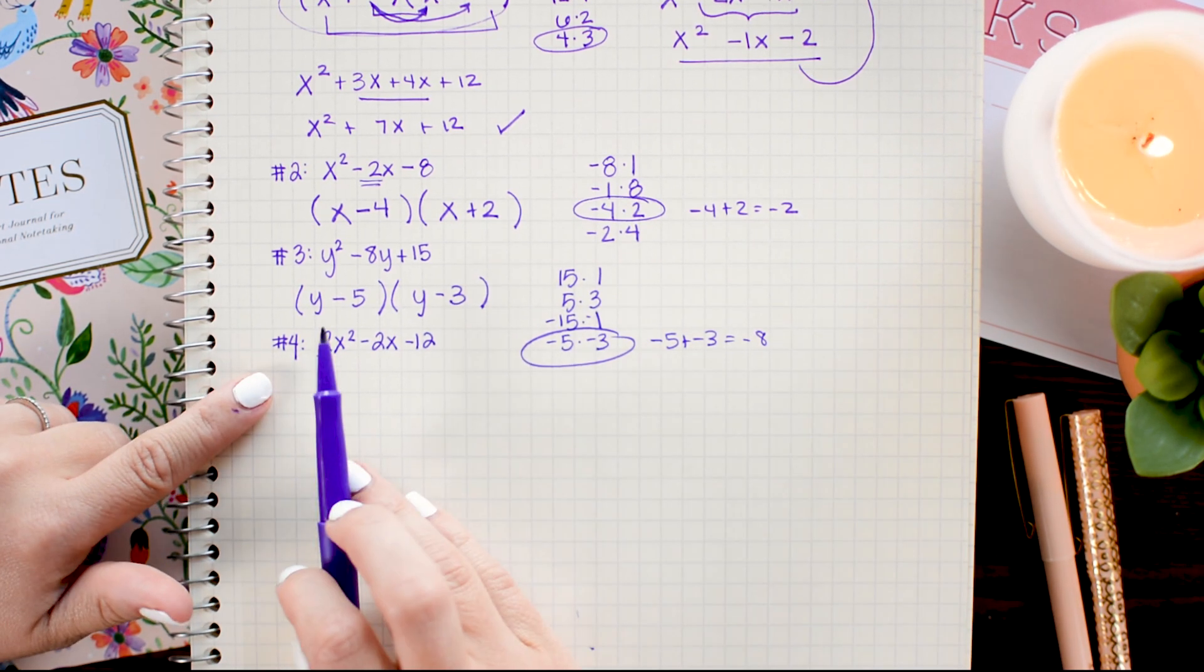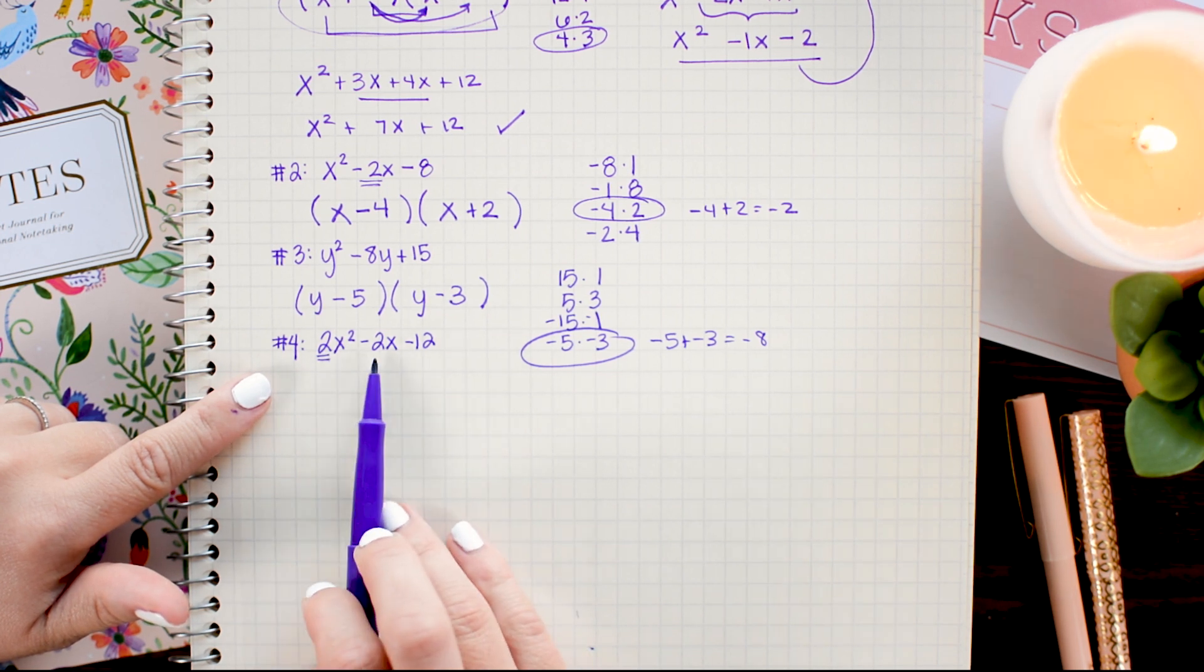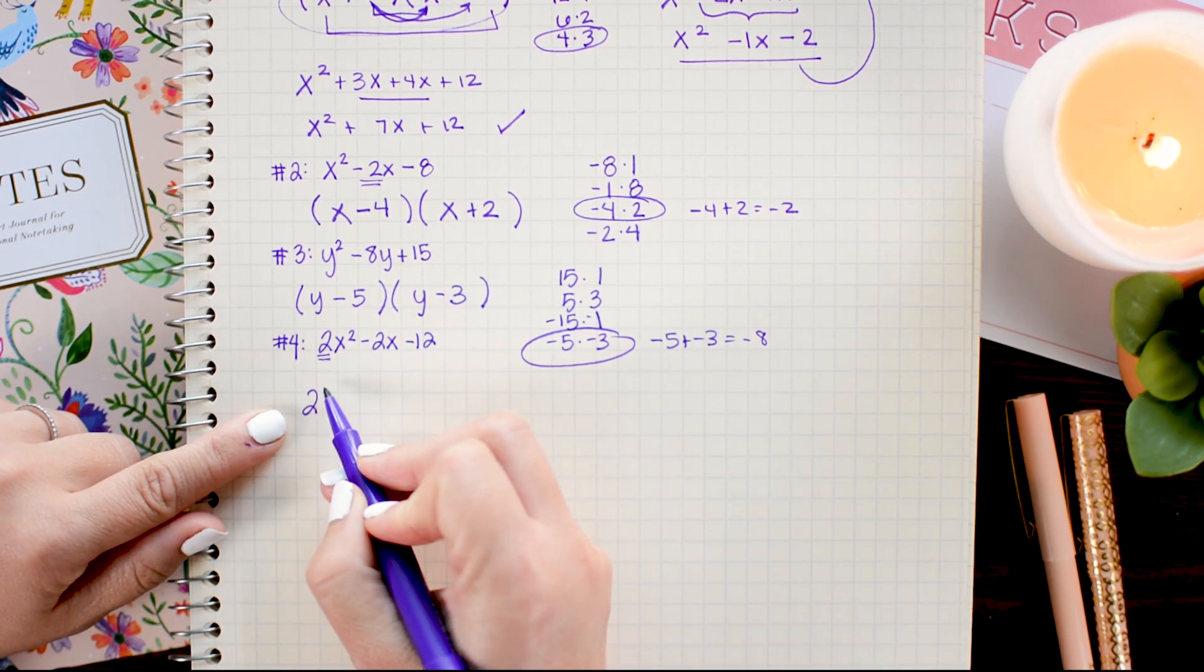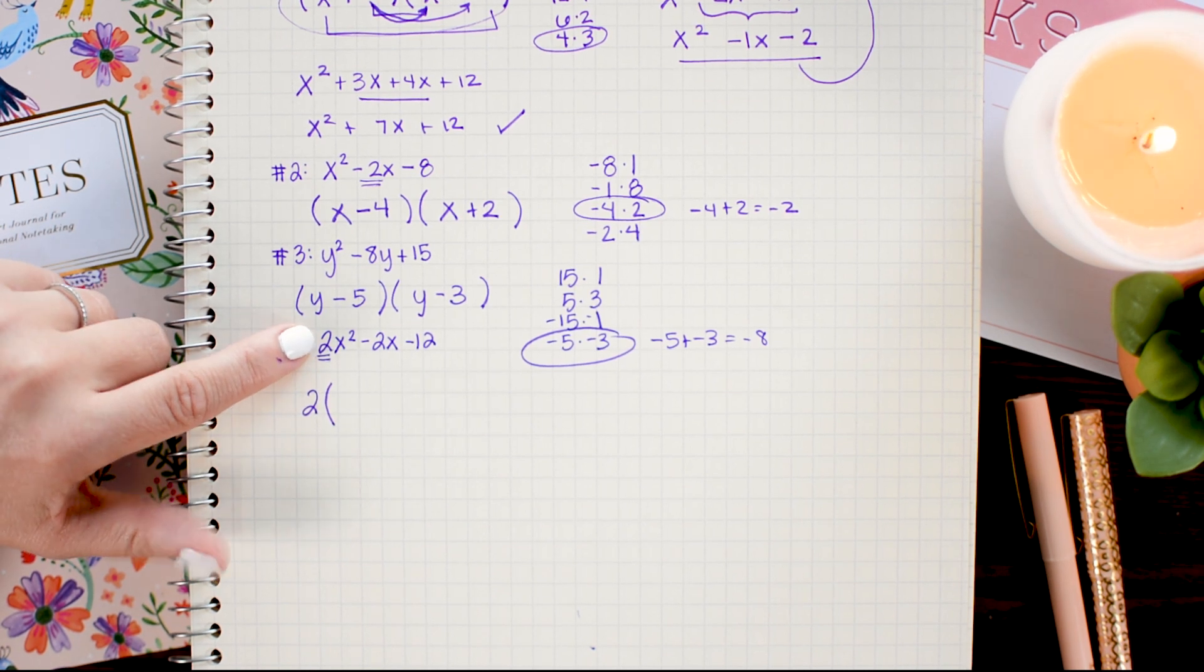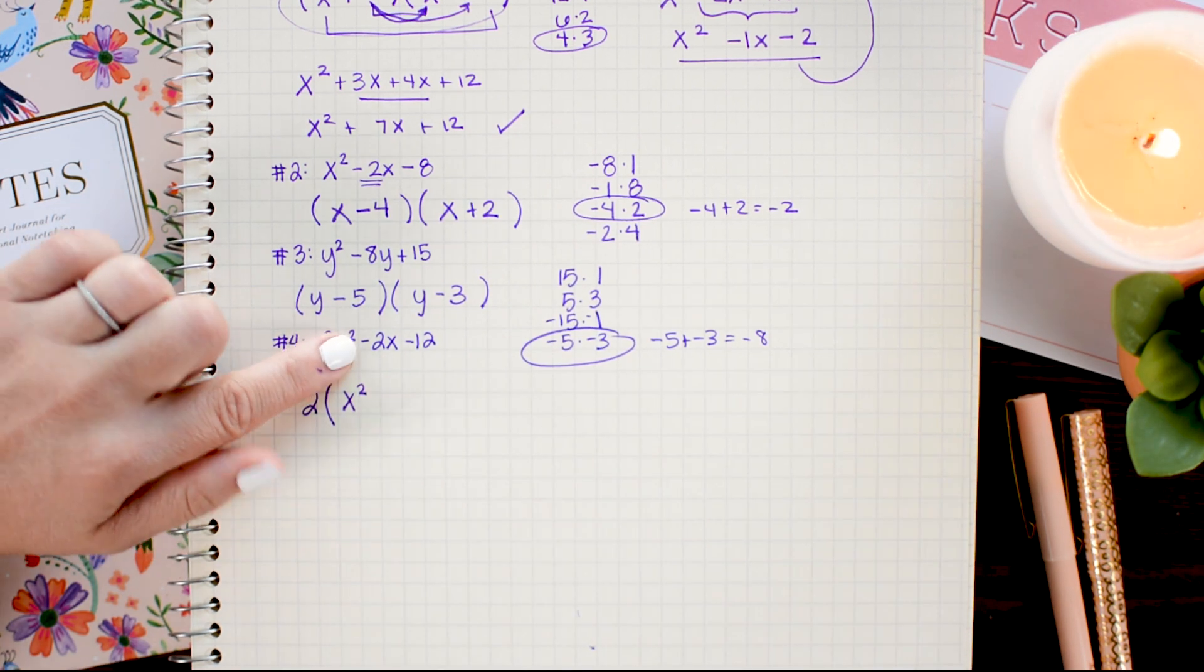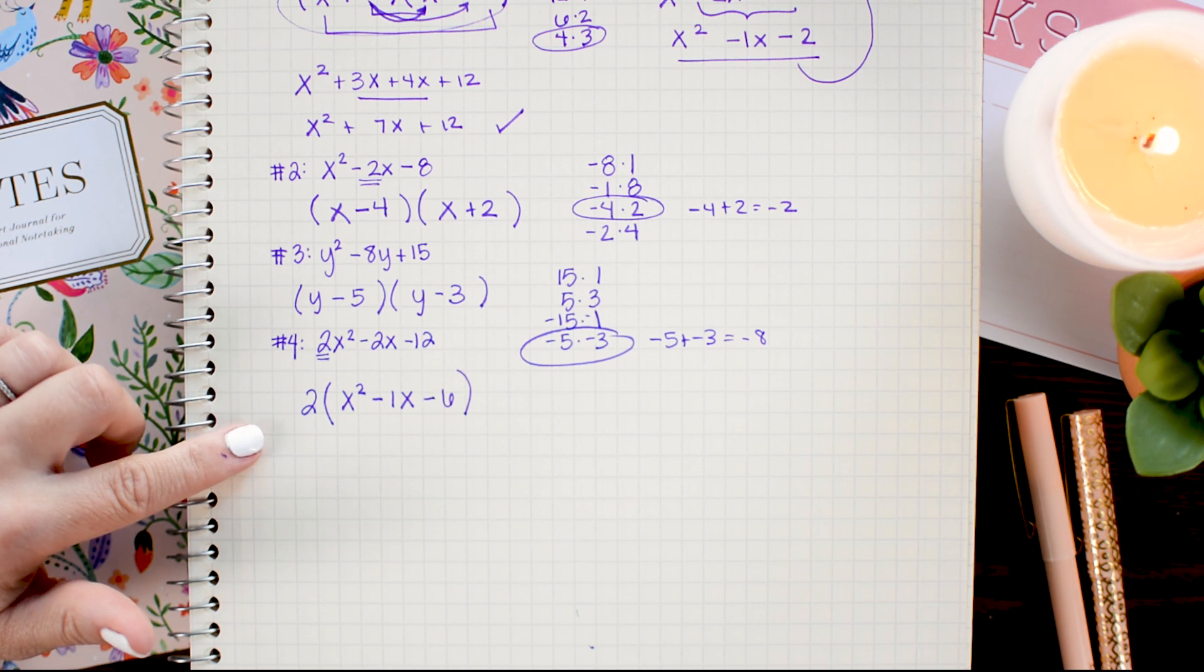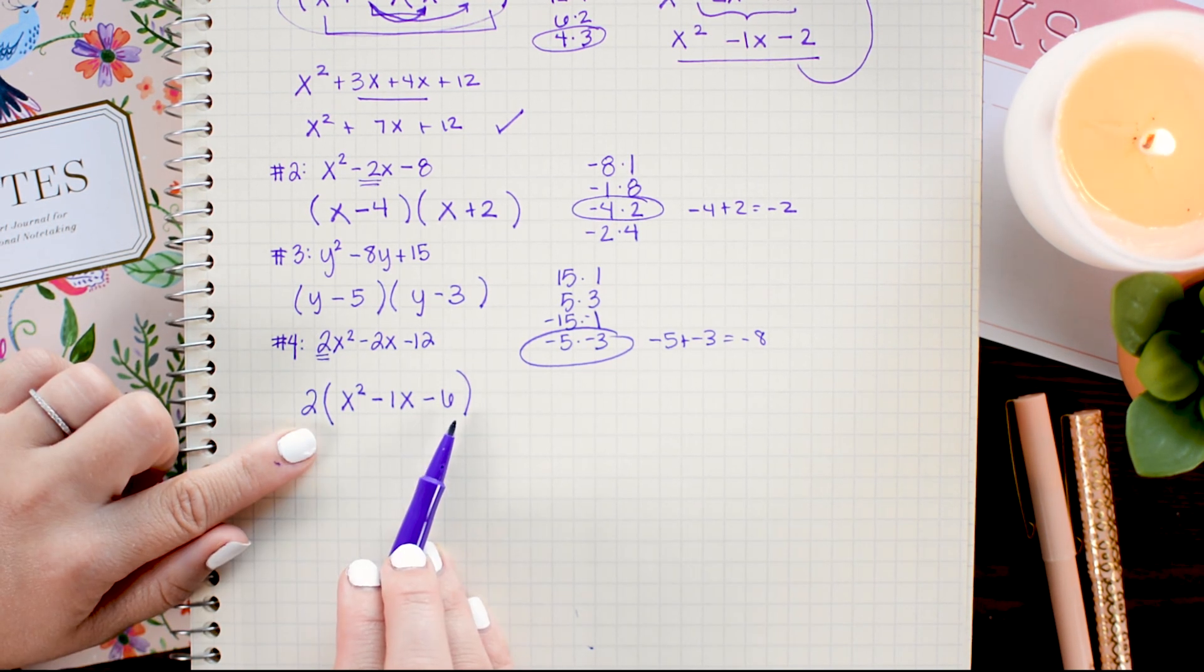So in this problem, because all of these terms have factors of 2, I can divide out a 2 into the front. So what that looks like is I'm going to write down the 2 I want to pull out, and then I'm going to add a parenthesis, and then I'm going to divide each of these terms by 2. So 2x squared divided by 2 leaves me x squared. Negative 2x divided by 2 is simply minus 1x. And negative 12 divided by 2 is negative 6. So in this scenario, by pulling out that 2, I now have a trinomial that is easy to factor.